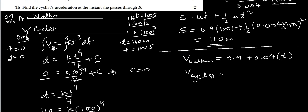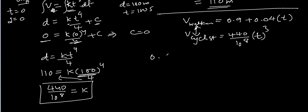Velocity of cyclist. The formula is given KT cube. So K we know now, it is 440 over 10 to the power 8, and T cube. T is T. And both of them have same speed. So we will equate the right side of both. So 0.9 plus 0.004T equal to 440 over 10 to the power 8 times T cube.